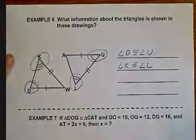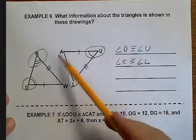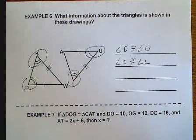K and L have double marks. So, angle K would be congruent to angle L. Now, W and A, they don't have any marks. But, that doesn't mean that they are congruent. That just means that they are not marked. So, I can't say that W is congruent to A. I just don't know that. Not yet.